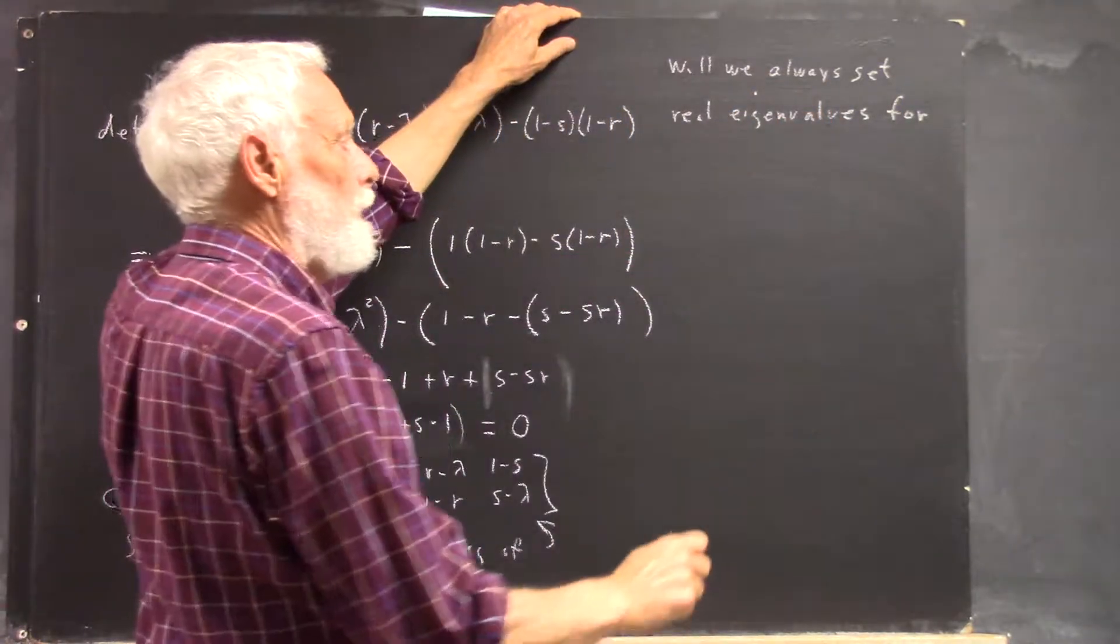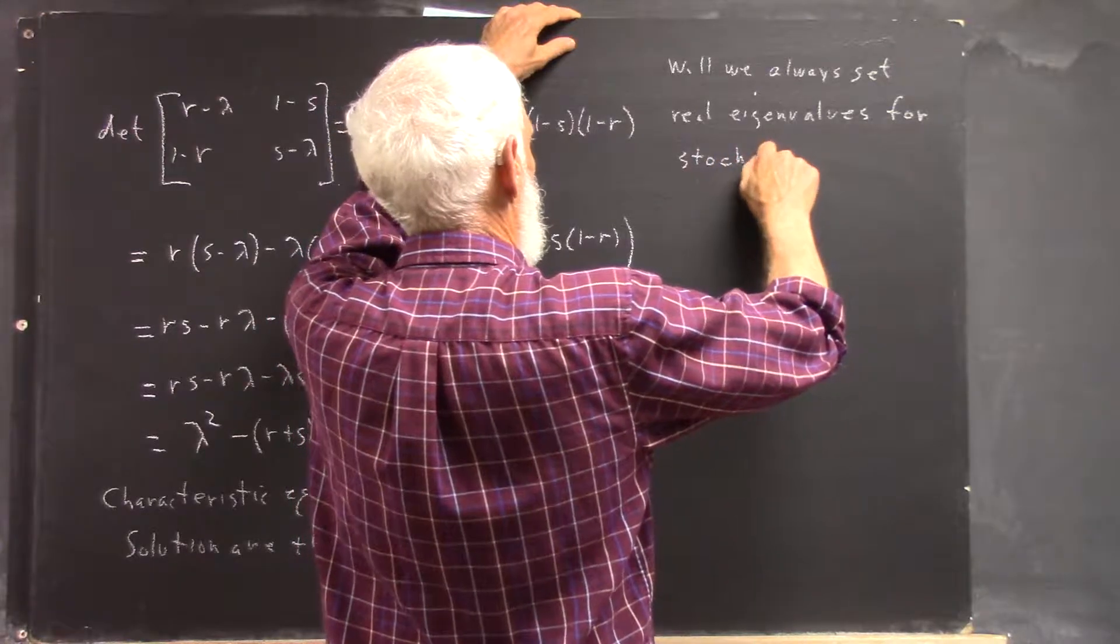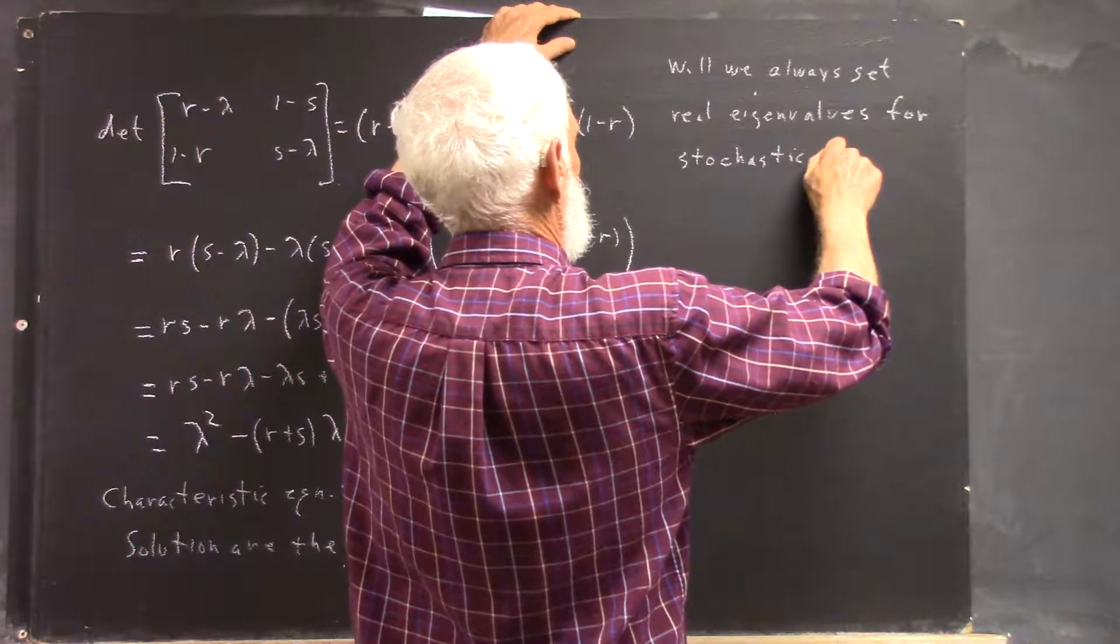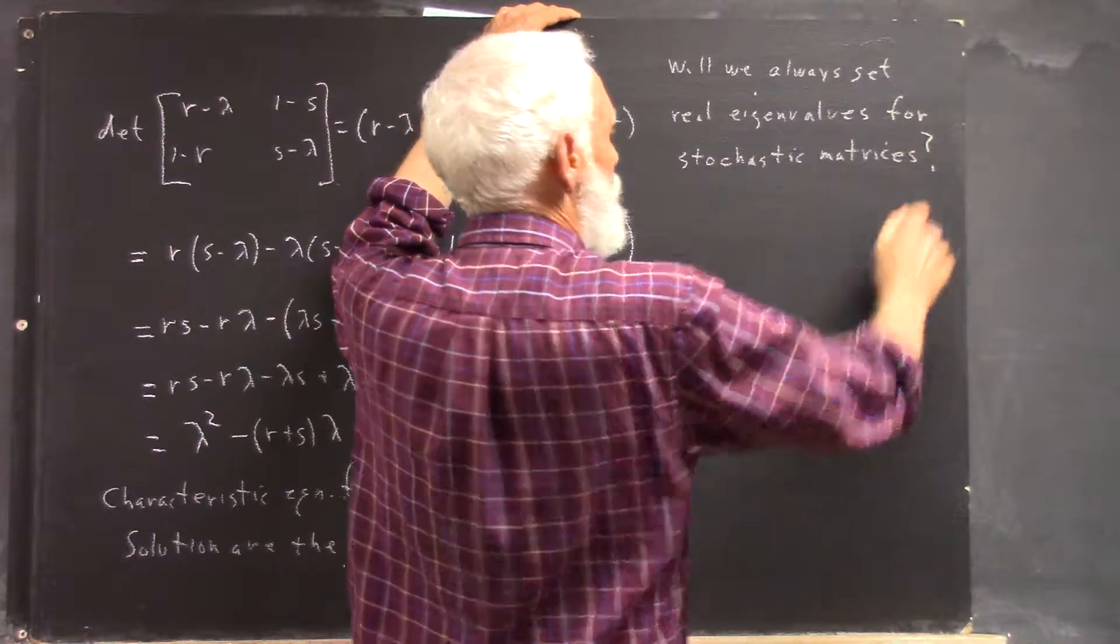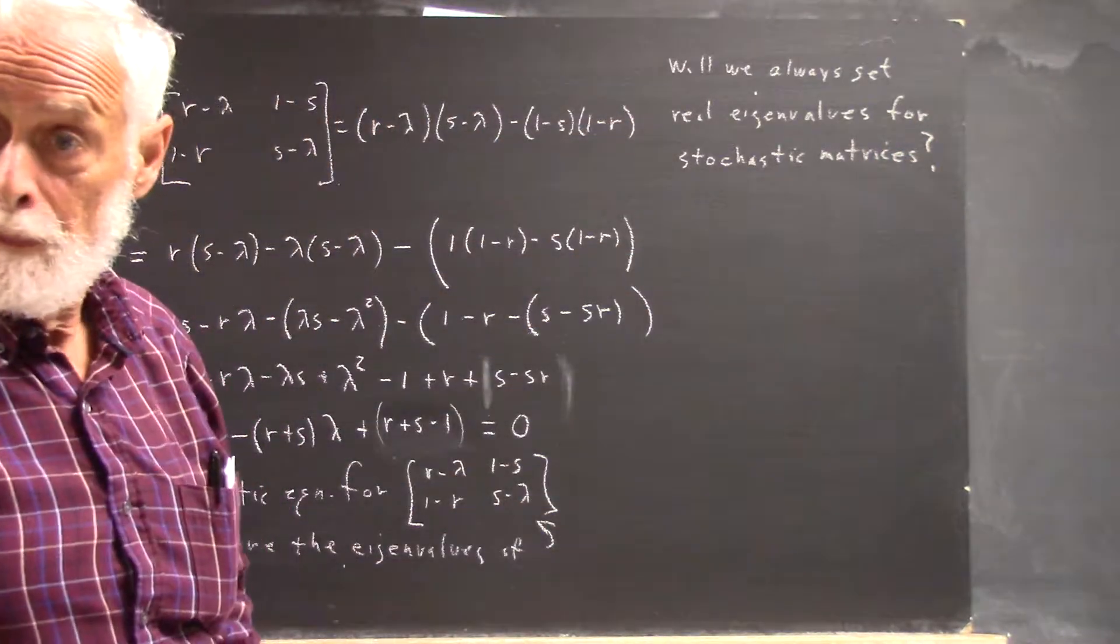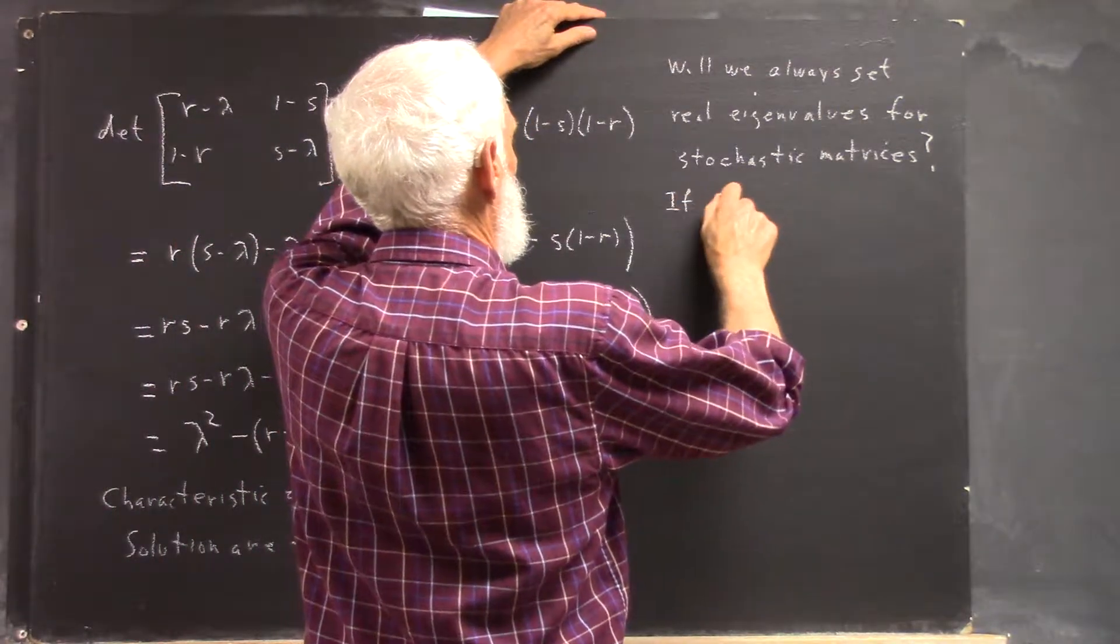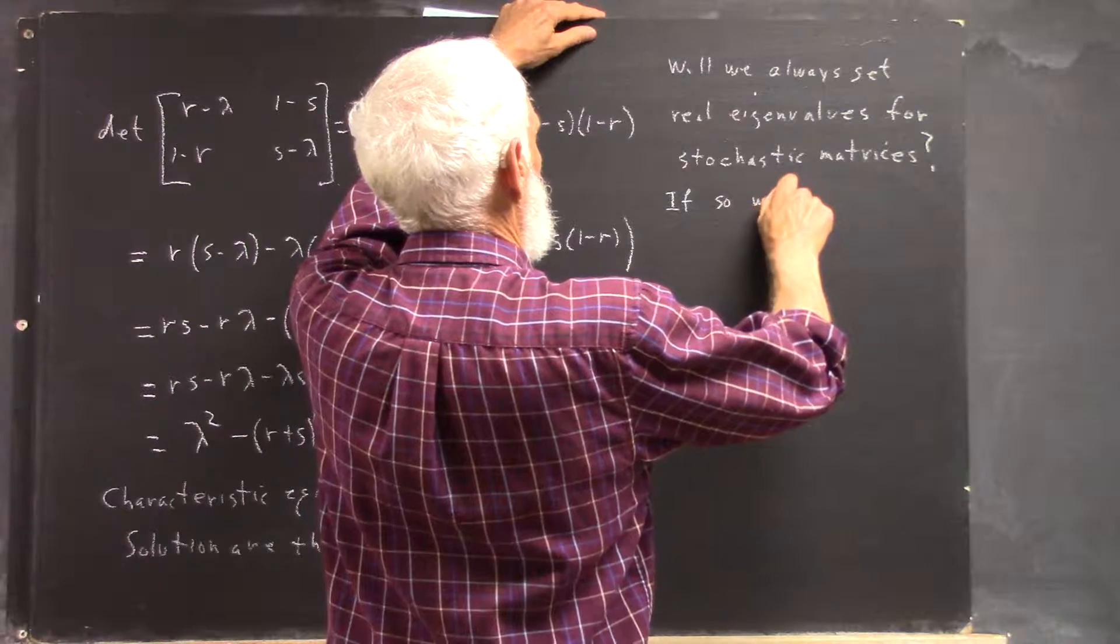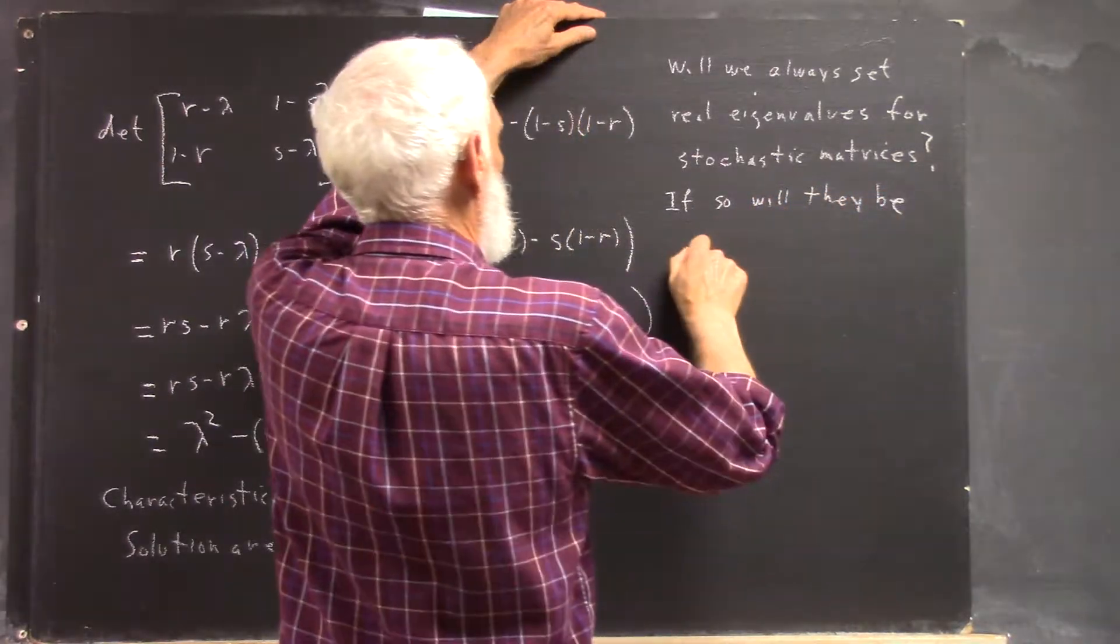We always get real eigenvalues for a stochastic matrix. If so, will they be distinct?